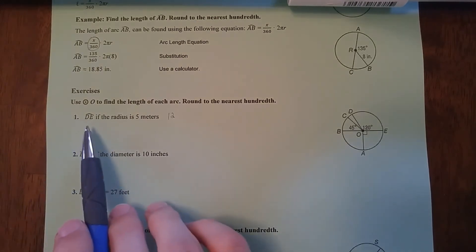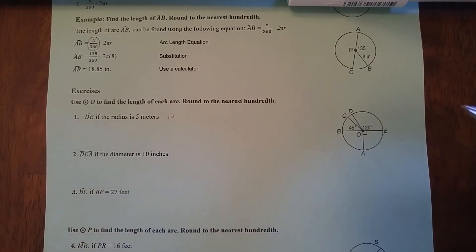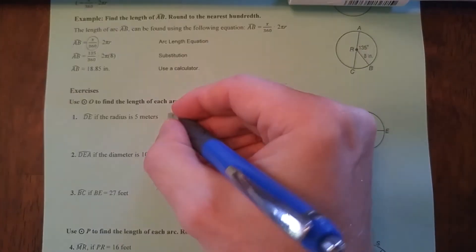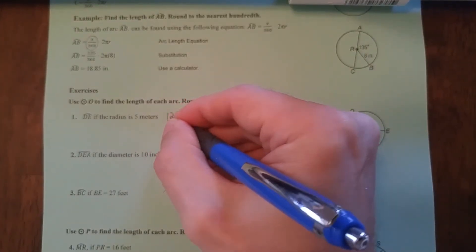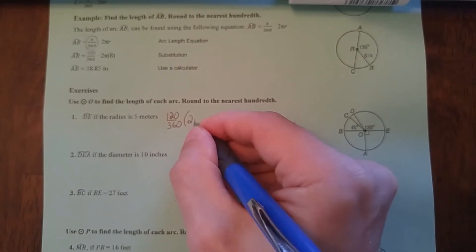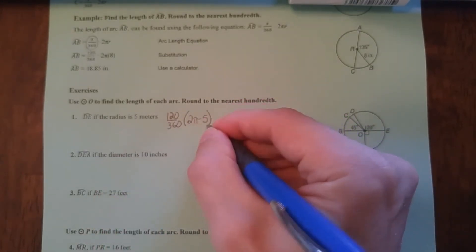So let's take a look at this first question. You're looking for the arc length of arc DE if the radius is 5 meters. Here's our picture. The central angle for arc DE is 120 degrees. So what we're going to do is we're going to write 120 over 360. That tells us what percent of the circle this arc is. We're going to multiply it by the circumference, which is 2πR. So we have 2 times π times the radius, which we're told is 5 meters.